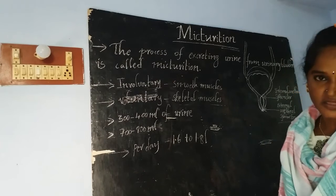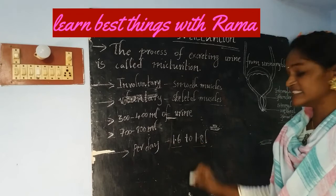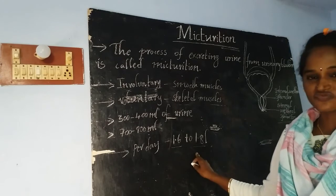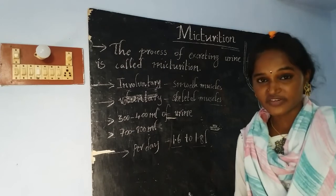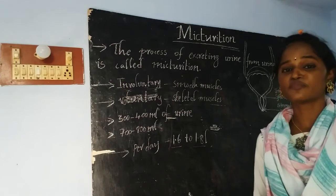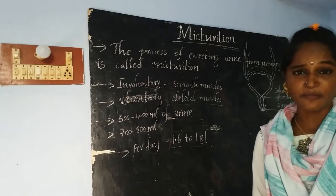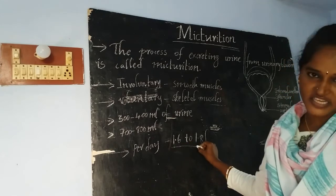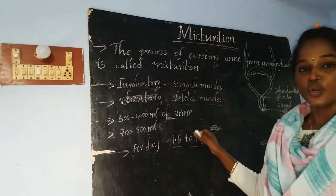Per day, we are able to excrete about 1.6 to 1.8 liters of urine. This range varies from person to person. Some people take more amounts of liquids in their diet — water and fruit juices — while some others take less. Depending on those habits, the range may vary; in some people it may be higher, in some lower.